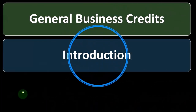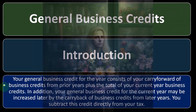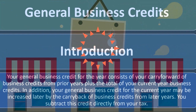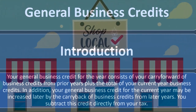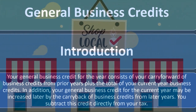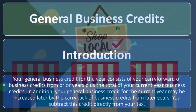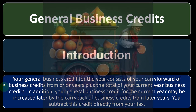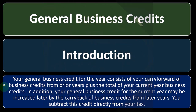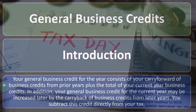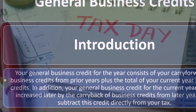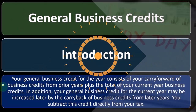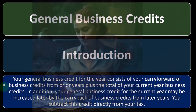Let's take a look at the general business credits. Your general business credit for the year consists of your carryforward of business credits from prior years, plus the total of your current year business credits. If there are any carryforwards, I would recommend — from a practical standpoint for a new client, and generally if you're doing a Schedule C — putting the information into the prior year software and trying to mirror what is on the prior year tax return so that you can roll forward the prior year information.